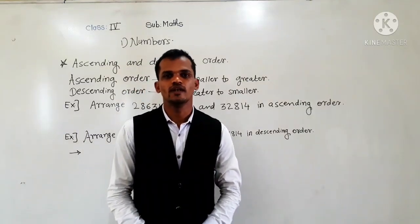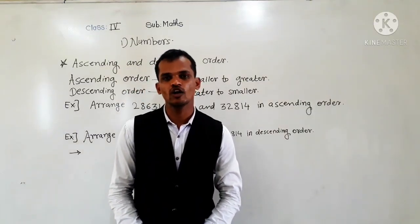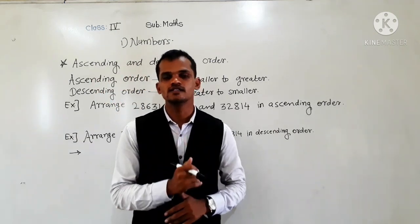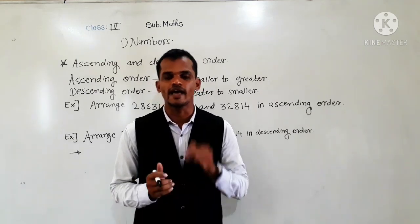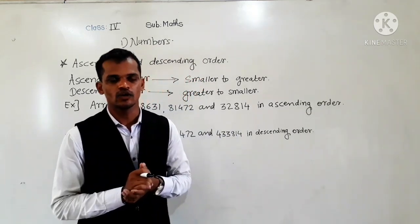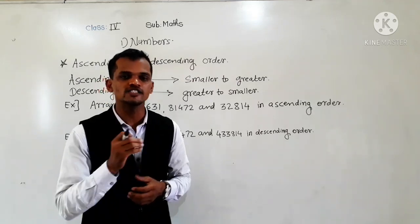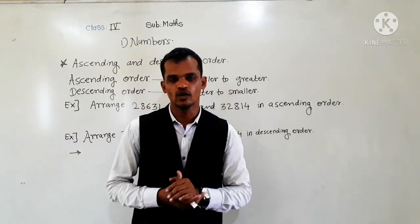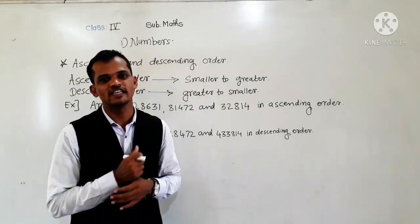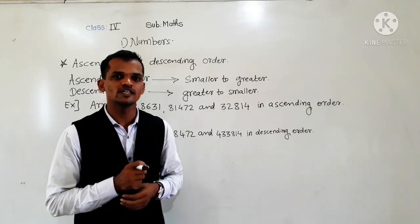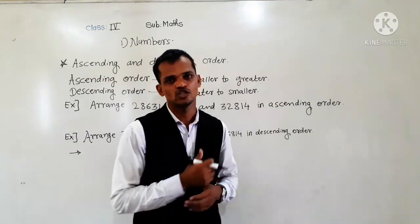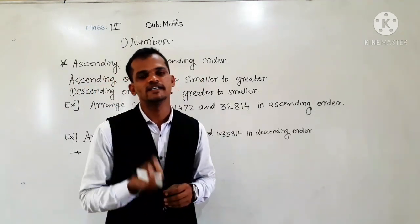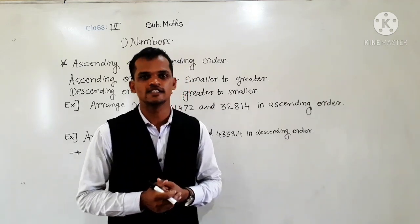Hello dear students, today we will learn ascending and descending order of the 5-digit number and 6-digit number. We have learned this concept in our previous standard. Ascending order means increasing order, where we arrange the given numbers from smallest to greatest. Descending order means decreasing order, where numbers are arranged from greatest to smallest.